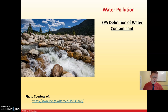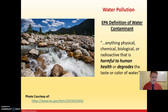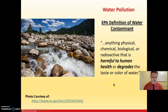Let's look at the EPA definition of a water contaminant. Just because water contains ions doesn't mean it's contaminated — you can have safe drinking water that still has magnesium, calcium, and other ions that can be beneficial. A water contaminant is anything physical, chemical, biological, or radioactive that is harmful to human health or degrades the taste or color of the water.